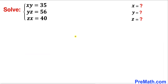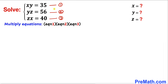Let's go ahead and get started with the solution. Here's the very first step we are going to take. Let me call this very first equation as equation number one, this second as equation number two, and this third one as equation number three. Now let's go ahead and multiply all these three equations.